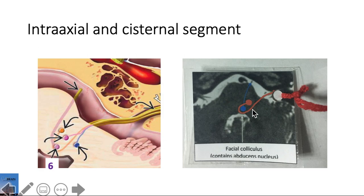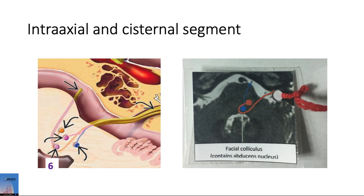The nerve then exits at the pontomedullary junction and takes a bath in the cistern. In this area it courses together with cranial nerve 8, so cranial nerves 7 and 8 are together in the cisternal segment.